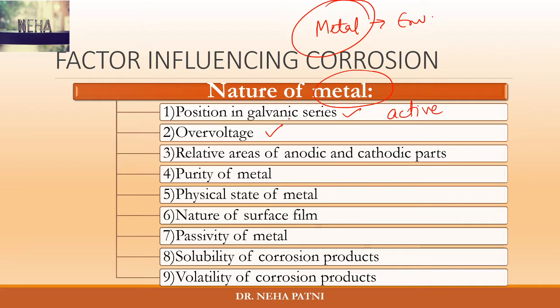The second factor related to metal is over voltage. A reduction in the over voltage of the corroding metal accelerates the corrosion rate, so we have to ensure there is no reduction in over voltage. Normally when a metal occupies a high position in the galvanic series and is placed in some solution, it undergoes corrosion forming a film and evolving hydrogen gas. That is because of the high over voltage of the other metal, which reduces the effective potential to a small value.